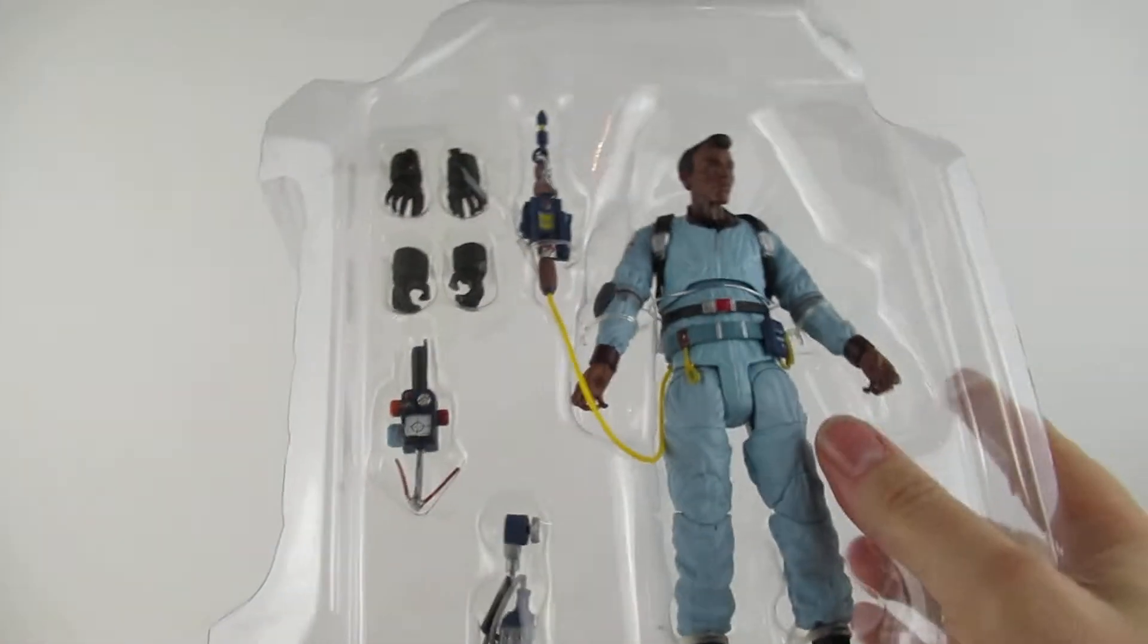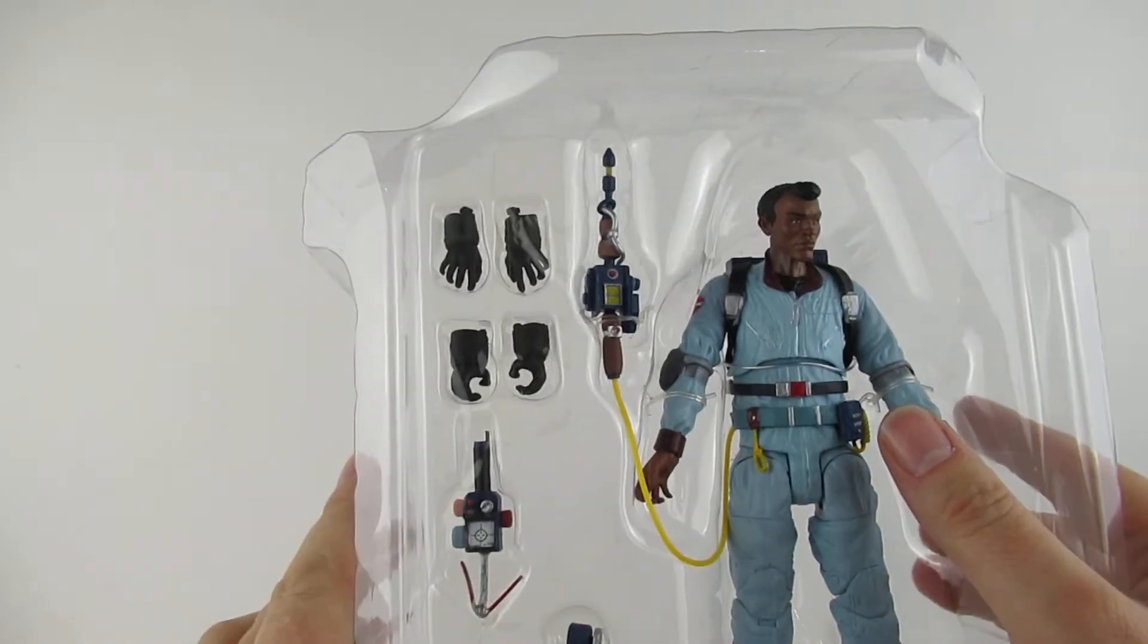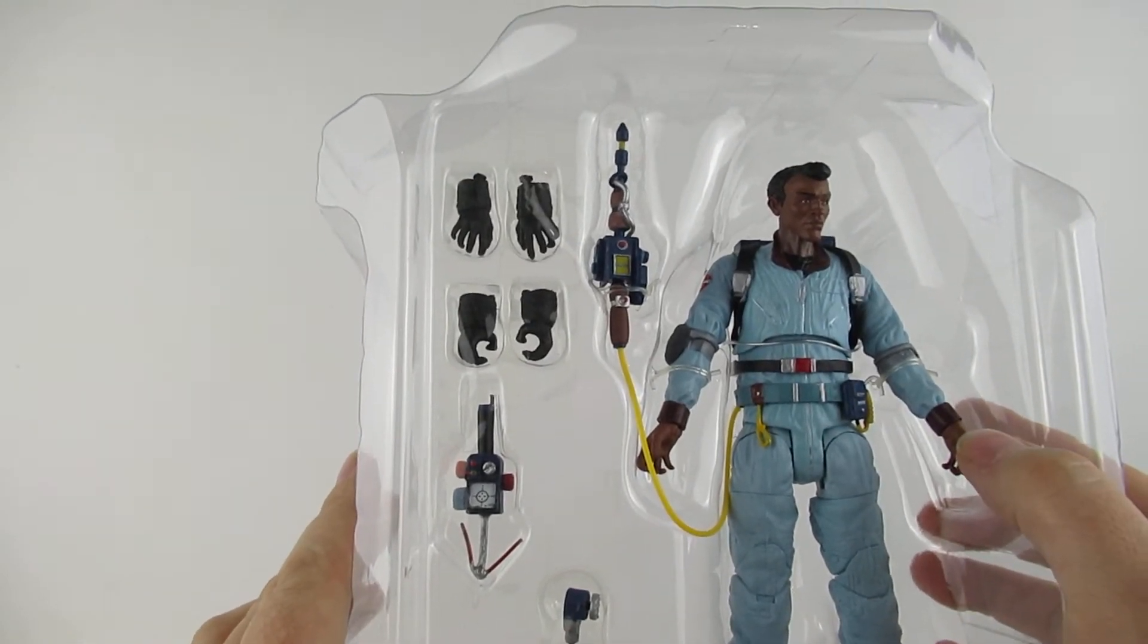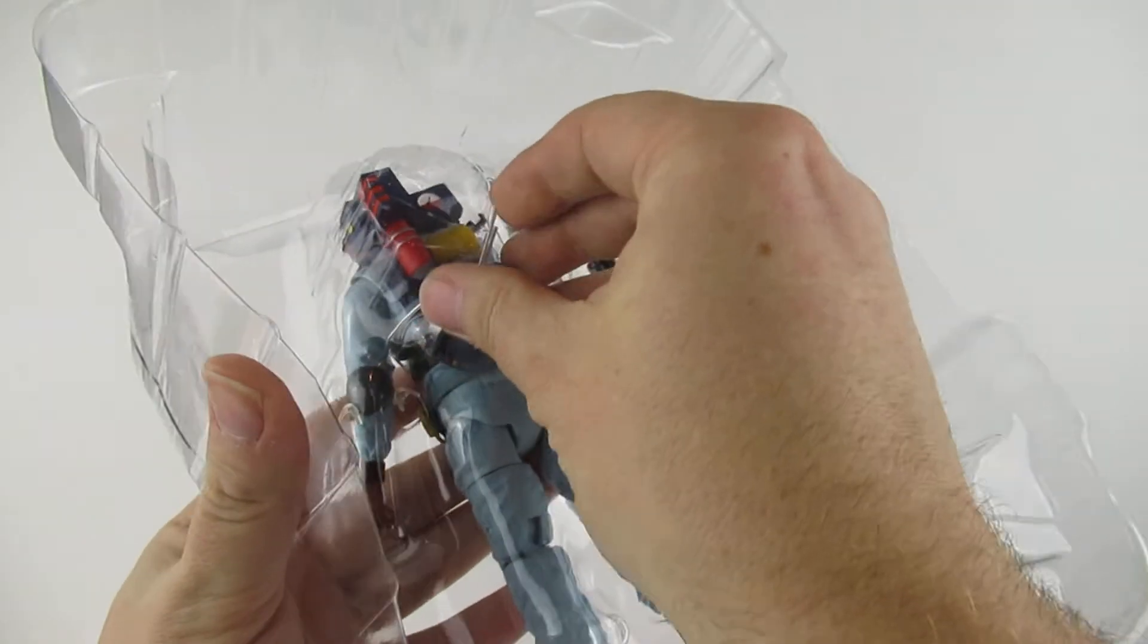There we go. Push that down there. So there's my base I guess. Hook and ladder sign. And here he is in all his glory. We're getting a PK meter, a trap, four sets of hands plus two he's already wearing and a proton pack.